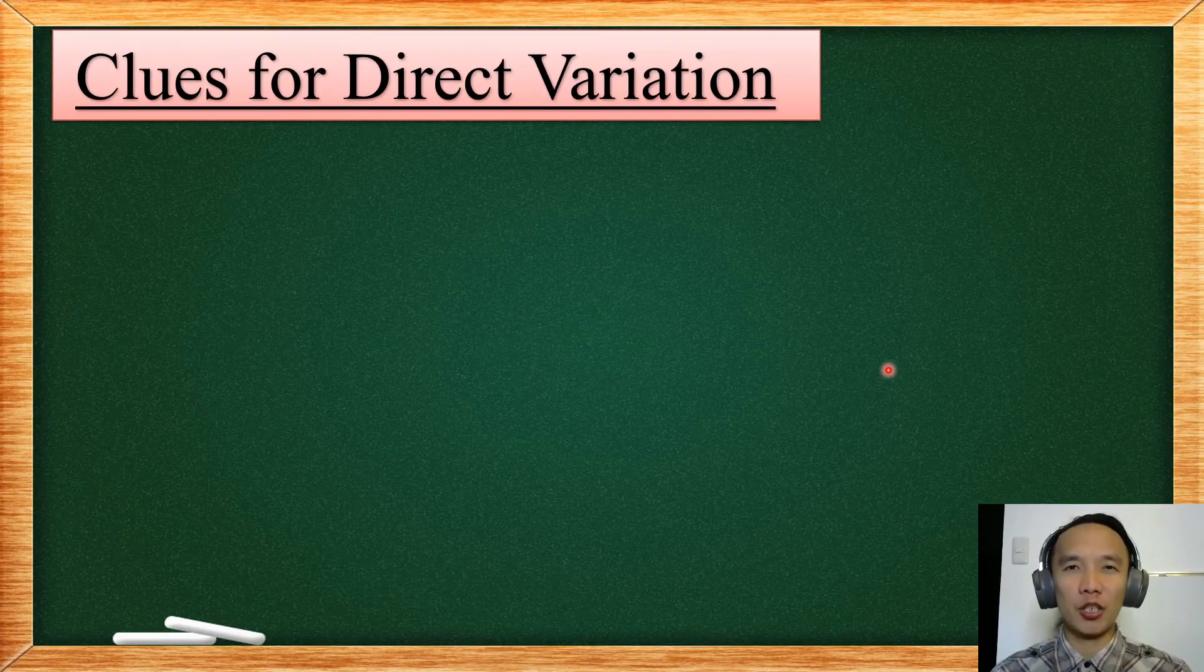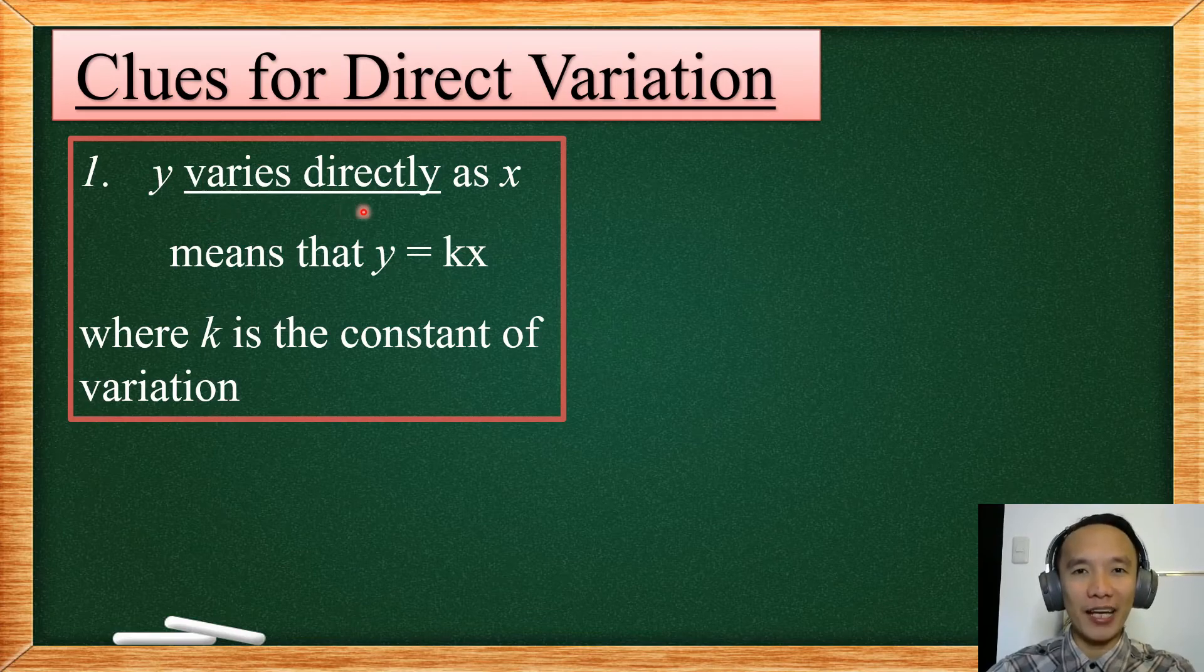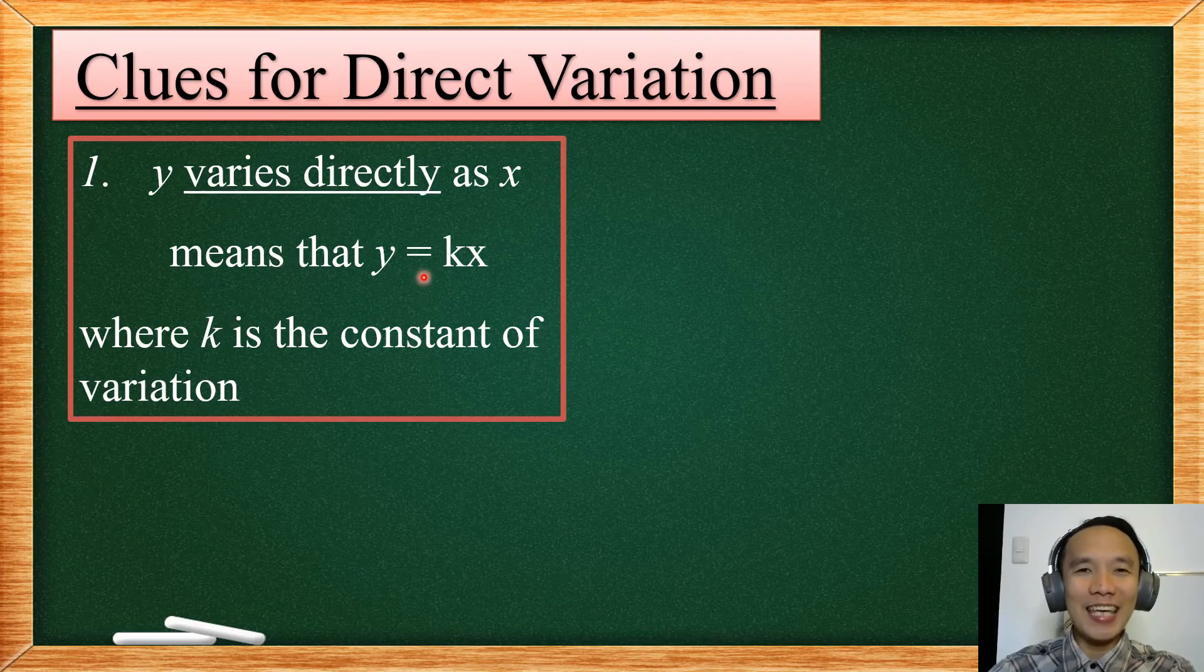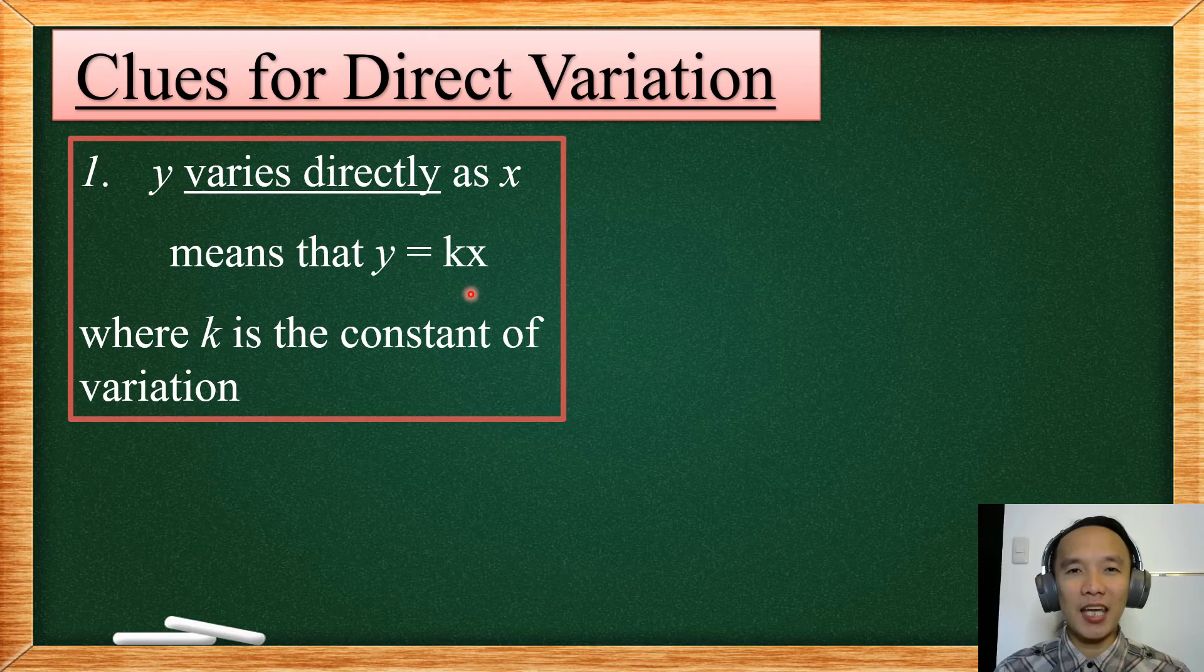So what are the clues for a direct variation? So first, there is the word varies directly. Y varies directly as X. Write that into a mathematical equation. First, you rewrite the letter Y, the equal sign, then the letter K, followed by the letter X. What is the letter K here? The letter K stands for the constant of a variation.